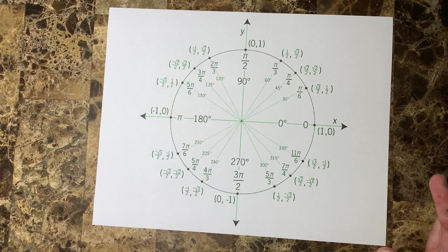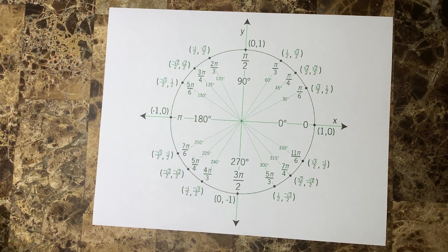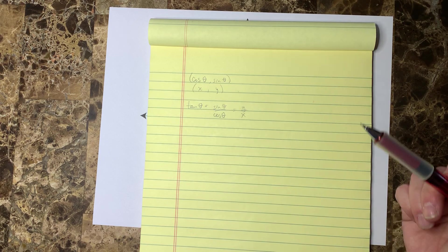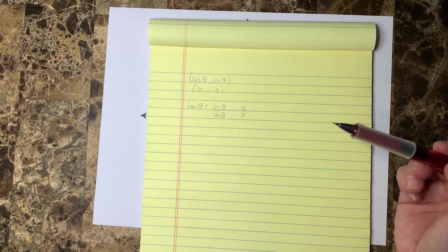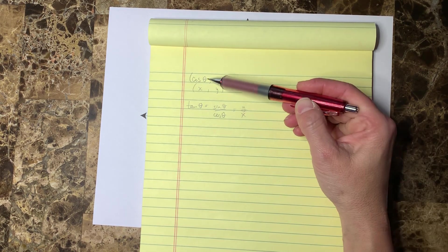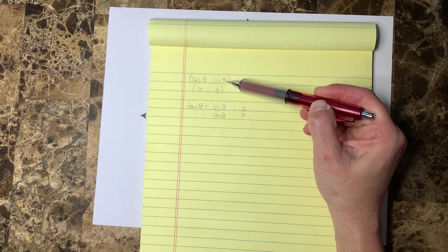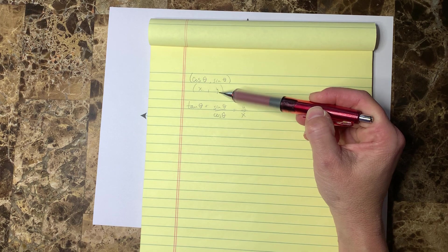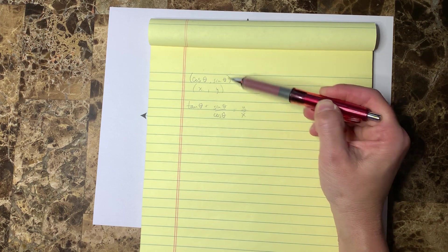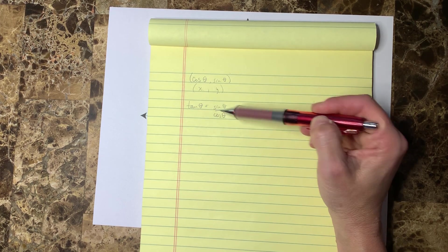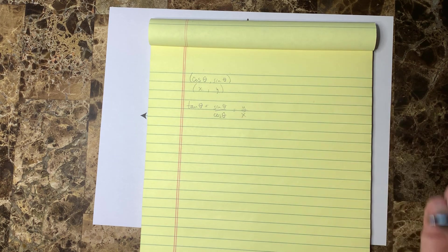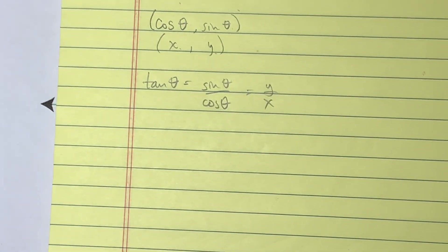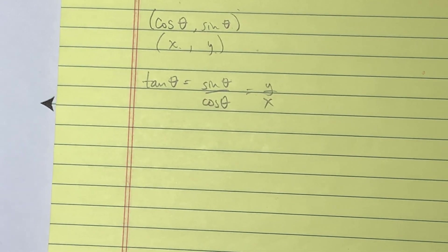There's two main things that I need to be able to get across to you. First thing: every single one of the locations on the unit circle tells you something about the cosine of the angle and the sine of the angle. The x coordinate is the cosine and the y coordinate is the sine, and then tangent is just the sine over the cosine. Feel free to pause the video and write that down.